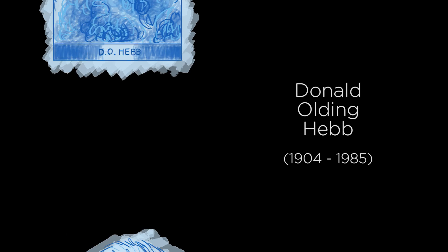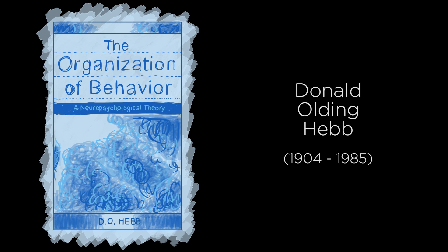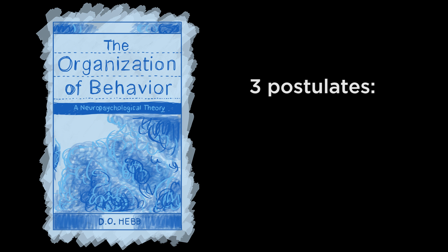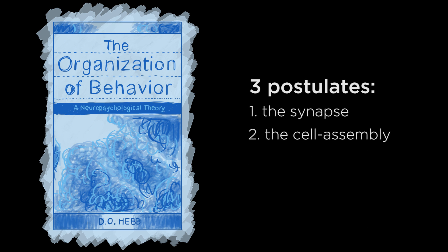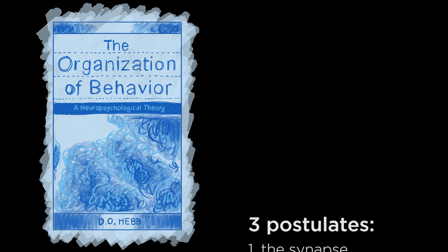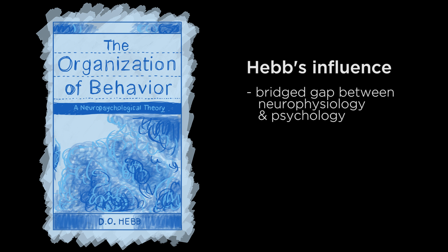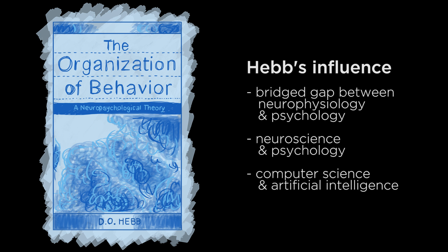Hebb was a psychologist whose work and insights formed the foundation of biopsychological research on behavior, the conscious state, learning and memory, motivation and attention, and other phenomena. In his book, The Organization of Behavior, Hebb presented an outline in the form of three postulates: the synapse, the cell assembly, and the phase sequence. Hebb's work helped bridge the gap between neurophysiology and psychology. Further, his work has influenced research ranging from neuroscience and psychology to computer science and artificial intelligence.